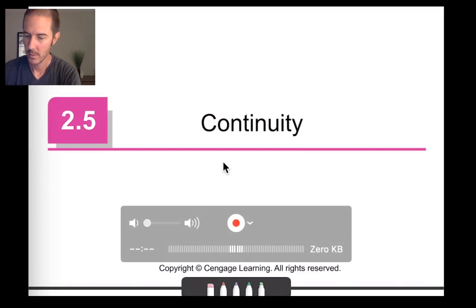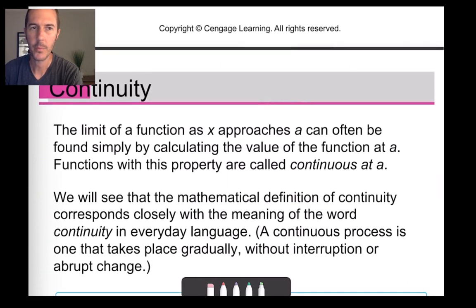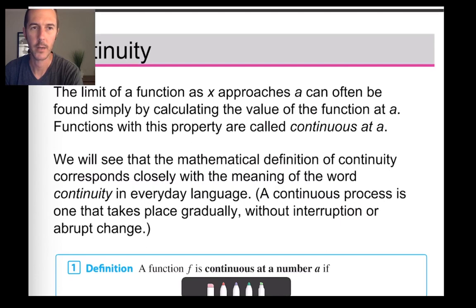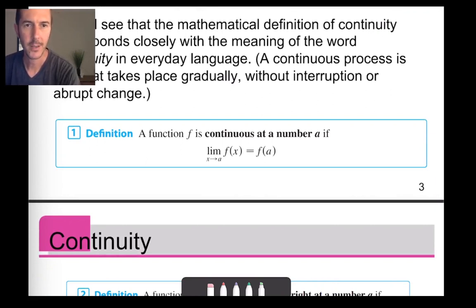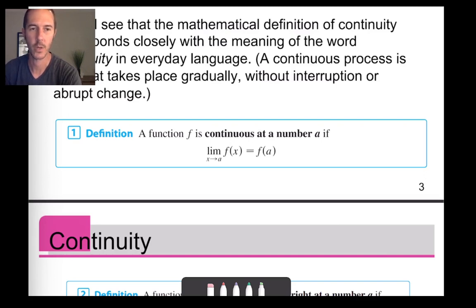Welcome to Calculus 1, Chapter 2, Section 5. Let's talk about continuity. This particular topic is going to follow very nicely from Section 2.4, and we're going to be using slides prepared for Stewart's Calculus 8th edition. We'll also pop over to a WebAssign homework assignment. The definition tells us that a function is continuous at a particular number if the limit of our function as x approaches a particular value is equal to the function evaluated at that particular value.